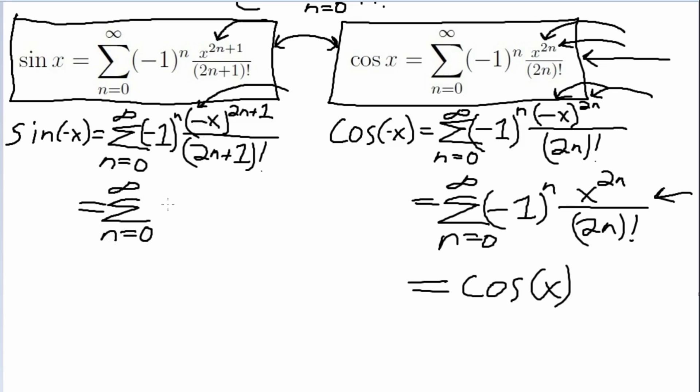These two parts of negative x, everything else we'll keep the same, so we have negative 1 to the nth power. Again, the denominator will remain the same. Negative 1, and here on top we have x being raised to the 2n plus 1, and negative 1 being raised to the 2n plus 1.